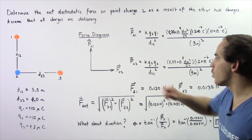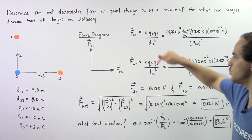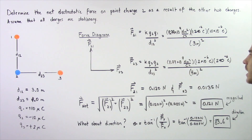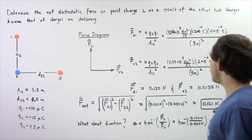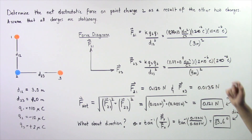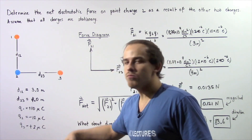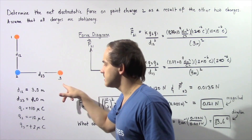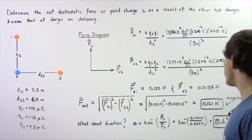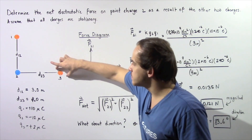The force acting on point charge two as a result of point charge three equals K times Q2 times Q3 divided by the distance squared. K and Q2 remain the same; Q3 is 2 micro coulombs, or 2 times 10 to the negative 6 coulombs, and the distance is 4 meters. Plugging into the calculator gives 0.0135 newtons.